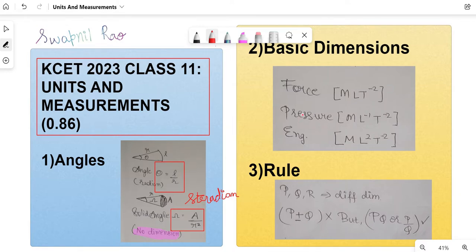Next, I will be going to basic dimensions that you have to memorize. If you check the NCERT, there are a lot of dimensions mentioned. However, you have to memorize these three as you can use these three to get the others. For force, it is MLT^-2. For pressure, it is ML^-1T^-2. And for energy, it is ML^2T^-2.